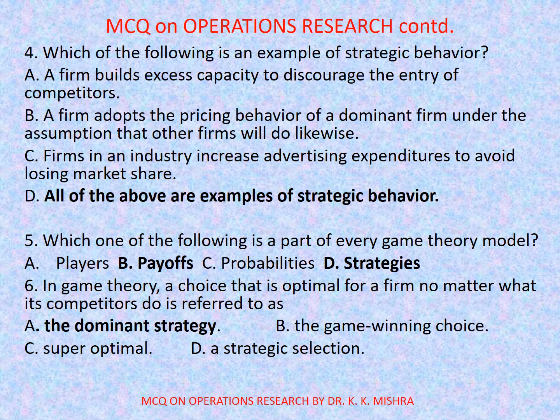Question number 6: In game theory, a choice that is optimal for a firm no matter what its competitors do is referred to as — options are: a) the dominant strategy, b) the game-winning choice, c) super optimal, d) a strategic selection. Correct option is a) the dominant strategy. Now move to next slide.